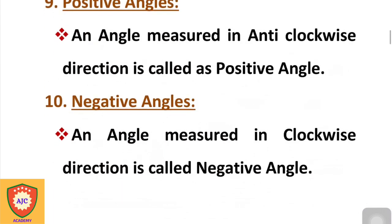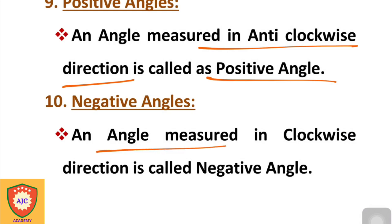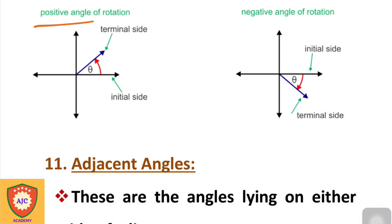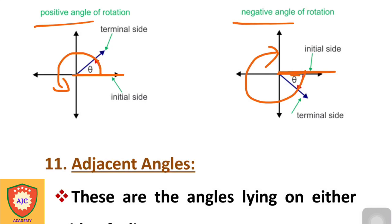The other type of angle is the positive angle and negative angle. A positive angle is measured in the anti-clockwise direction, while a negative angle is measured in the clockwise direction. We rotate from the initial position to define positive or negative angles.